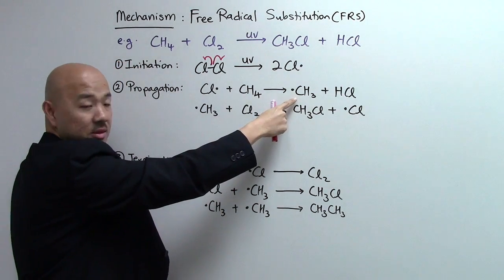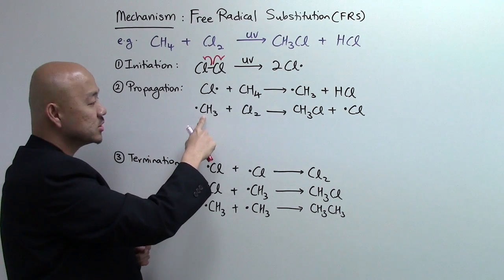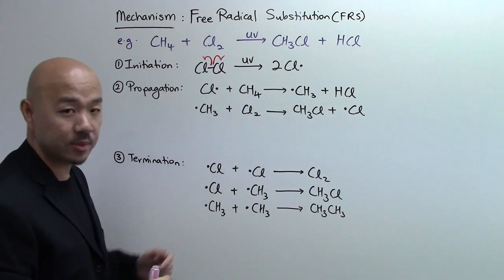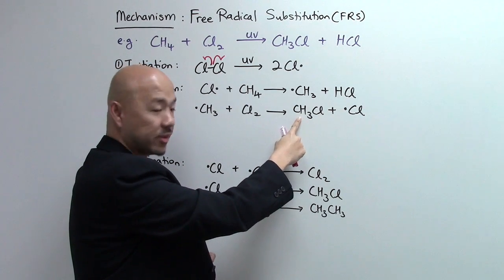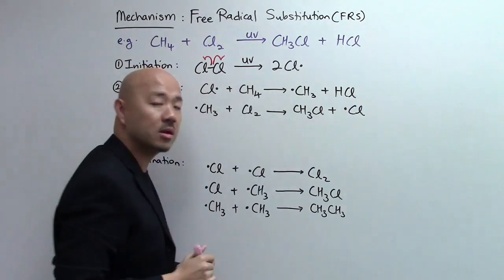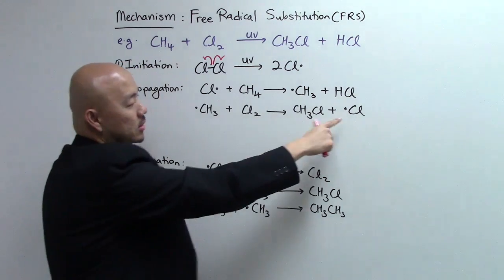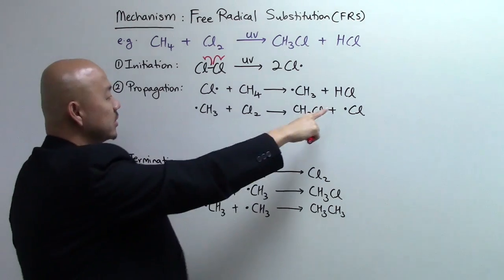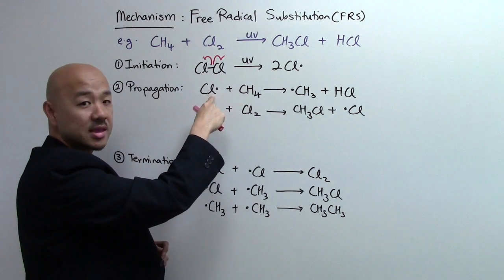The radical, the methyl radical is still very reactive, so it will look for the second chlorine molecule and react with it to form the product chloromethane and the chlorine radical. You will see here, the chlorine radical is still very reactive.